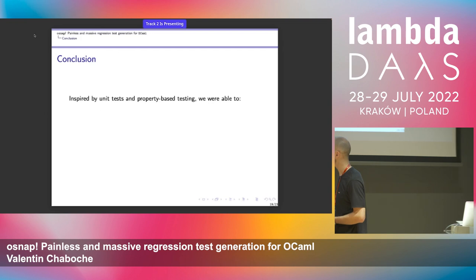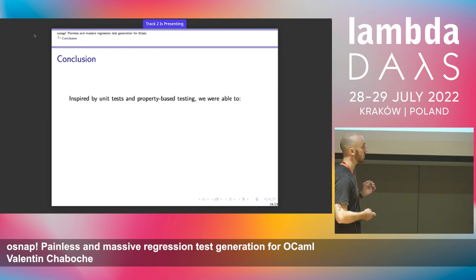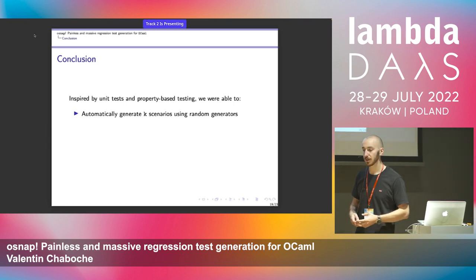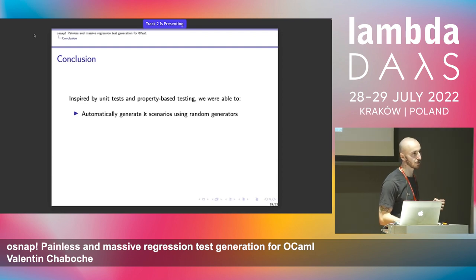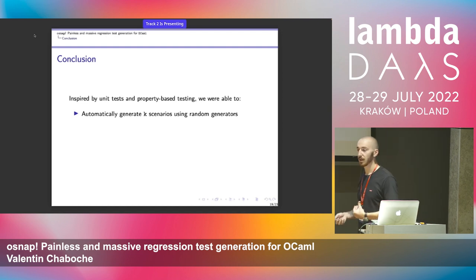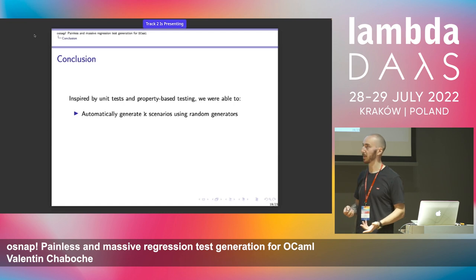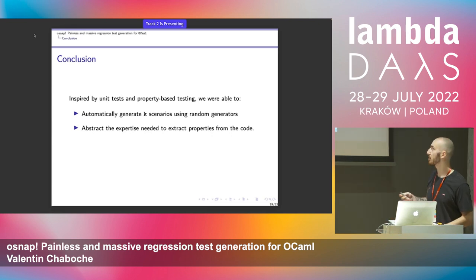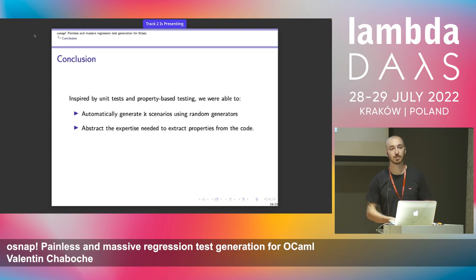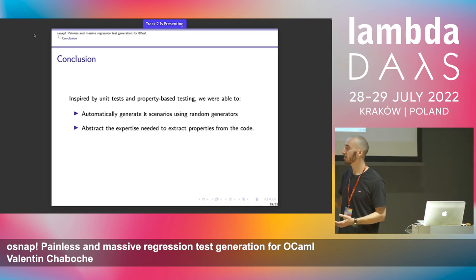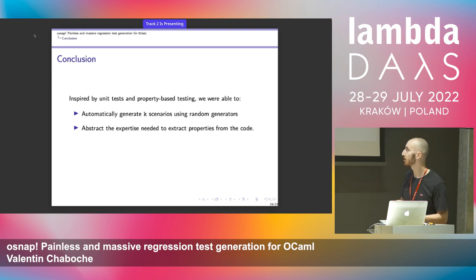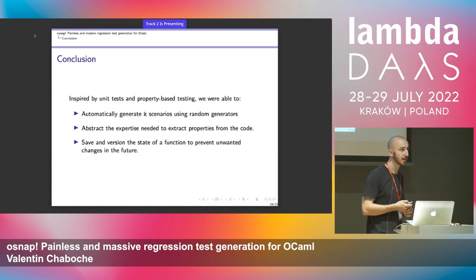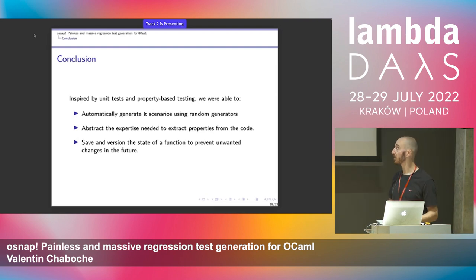To conclude: inspired by unit tests and property-based testing, we automatically generate a large number of scenarios using random generators. You can generate a lot — it will take some time the first run, but once generated, you read from disk and it's fast afterwards. We also abstracted away the need to extract properties from the code, enabling black-box testing at a very low level. Finally, we can save and version the state of a function to prevent unwanted changes in the future.